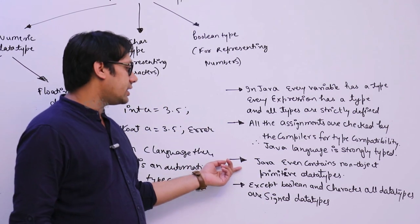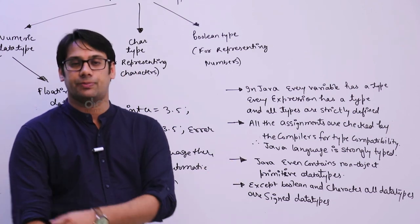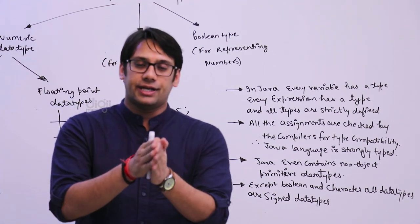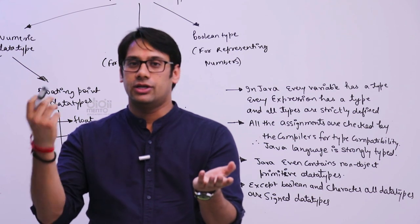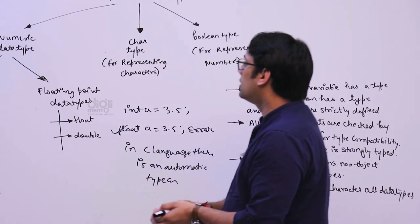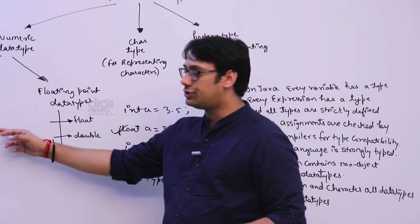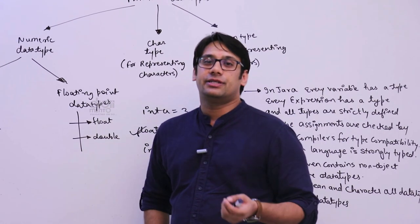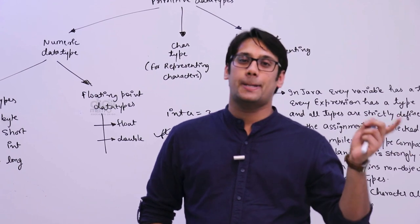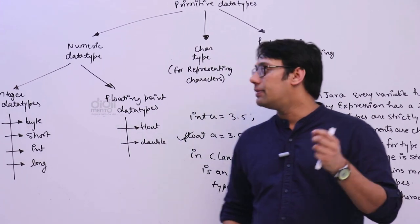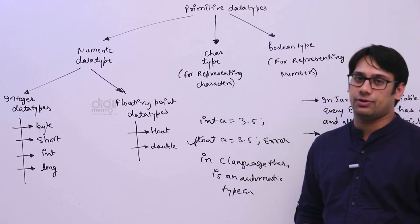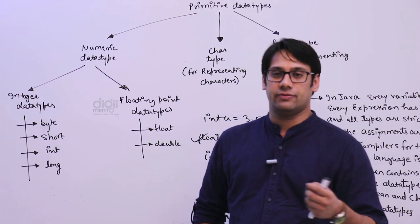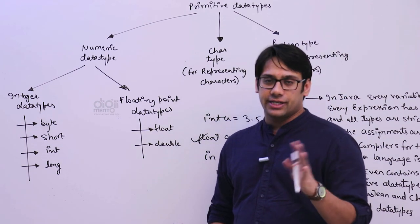Java contains non-object primitive data types. Data types are categorized into two categories: primitive, which are defined internally like int, char, float, byte, short, long, and boolean; and user-defined. In C, user-defined types are created using structures. In Java, we create objects of a class - the class acts as a data type. All assignments are checked by the compiler for compatibility. Except boolean and character, all data types are signed, meaning they can hold positive and negative values.